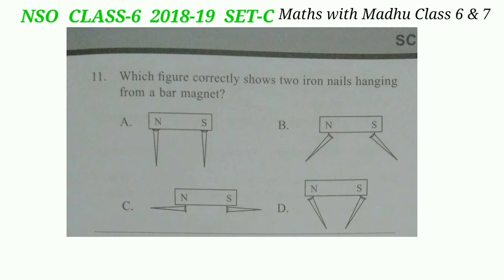Now coming to the science portion. Question 11: which figure correctly shows two iron nails hanging from a bar magnet? Look at the figures carefully — the bottoms of the nails have opposite polarity, so they will attract each other. The correct answer will be option D.